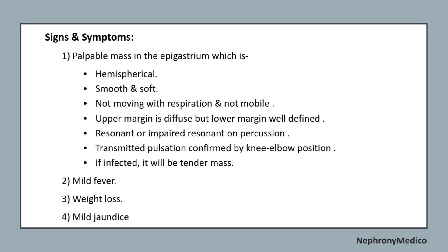Signs and symptoms: a palpable mass in the epigastrium which is hemispherical, smooth, and soft, not moving with respiration, and mobile. The upper margin is diffuse but the lower margin is well defined. Resonant or impaired resonance on percussion may be seen. Mild fever, weight loss, and mild jaundice may be present.